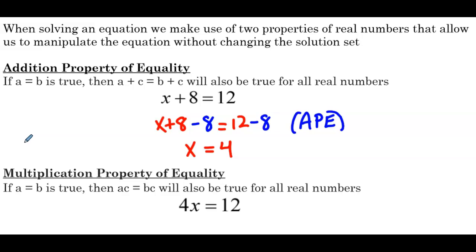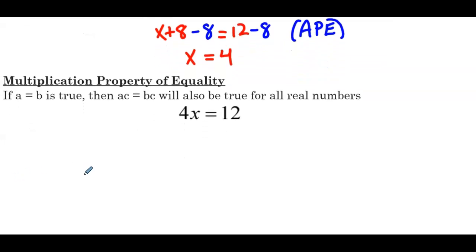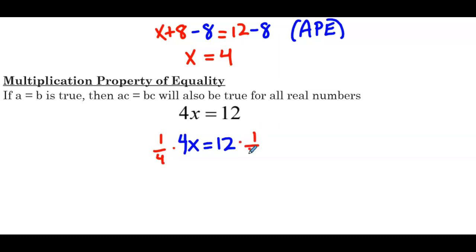The other property is the multiplication property of equality: if a equals b is true, then a times c equals b times c is also true for all real numbers. Whatever we multiply one side by, we must multiply the other side by as well. In our example, 4x equals 12 — we multiply both sides by 1/4 (by the MPE). So 1/4 times 4 gives us x on the left, and 12 times 1/4 gives us 3 on the right, so x equals 3.